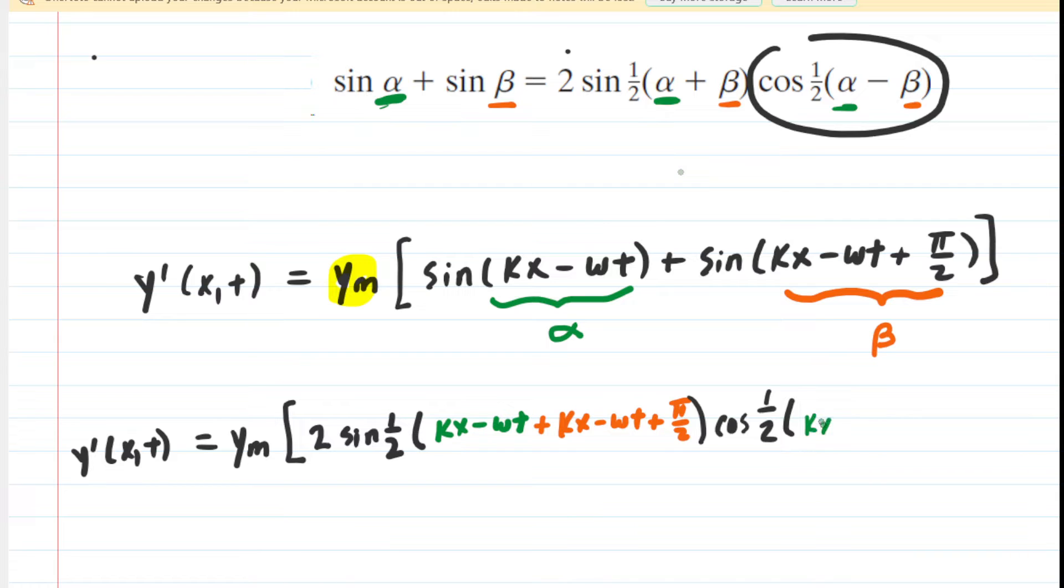Let's do this carefully. We're going to have kx - ωt. Now we're going to be subtracting β, but when you subtract β, you're going to have to distribute the minus sign. So just do that very carefully.